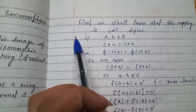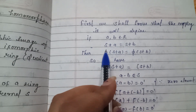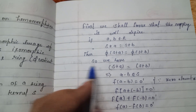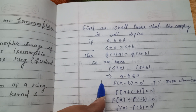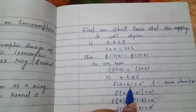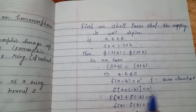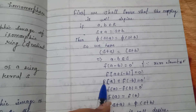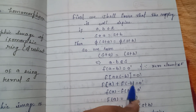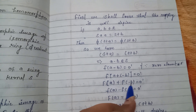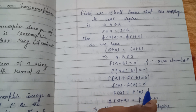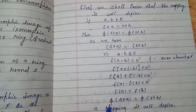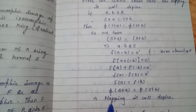First we shall prove that the mapping is well defined. If A, B belong to R and S+A = S+B, then phi(S+A) = phi(S+B). We have S+A = S+B which implies A - B belongs to S. So F(A-B) = 0', which means F(A) - F(B) = 0', hence F(A) = F(B). Therefore phi(S+A) = phi(S+B), so the mapping is well defined.